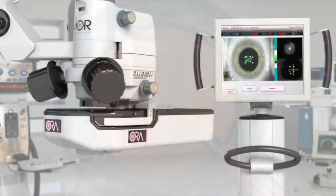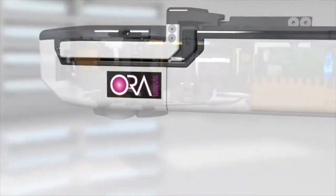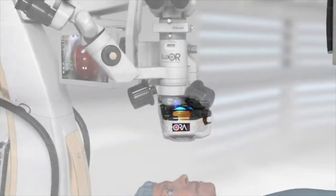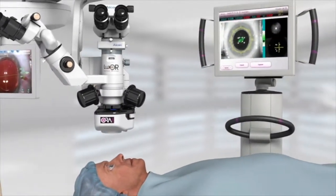And at that point during the surgery, we can actually use the Aura System to measure the optics in a very detailed way right there on the table. And the patient is simply looking at a red flashing light during that process.